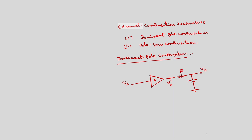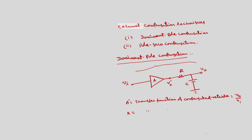This is the final output V0. So, if I assume that A dash is the transfer function of the compensated network, this is given by V0 by Vi for the overall system. And A is the transfer function of the uncompensated system, given by V0 dash by Vi. First, I will find out the relation between V0 dash and V0 — what is V0 in terms of V0 dash? This is voltage division. In Laplace transform, we can write this as minus 1 by SC.